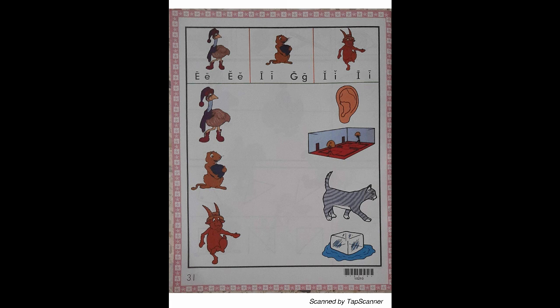Put your finger on the picture of the Ibex that is over the green line. Say, Ibex reads I. With your pencil, draw a line from the Ibex to the I sound letters.